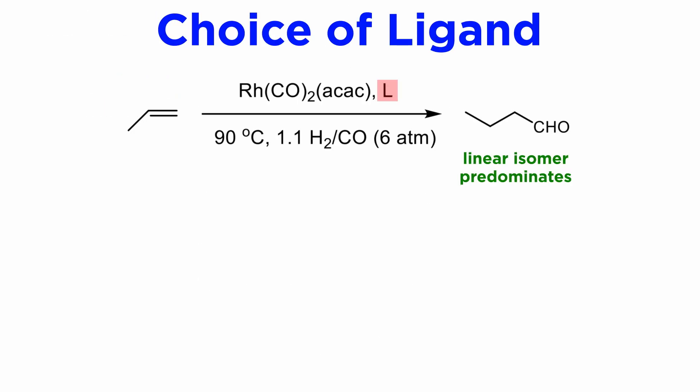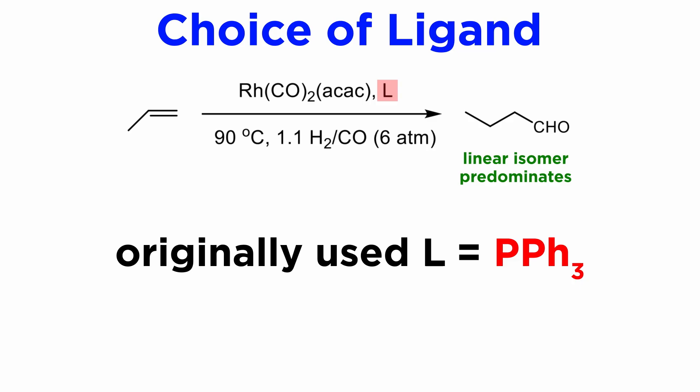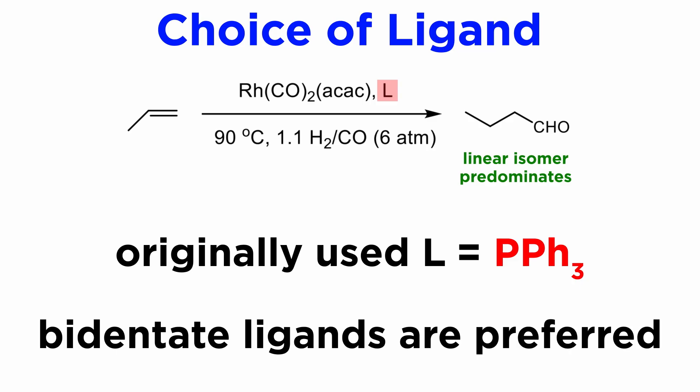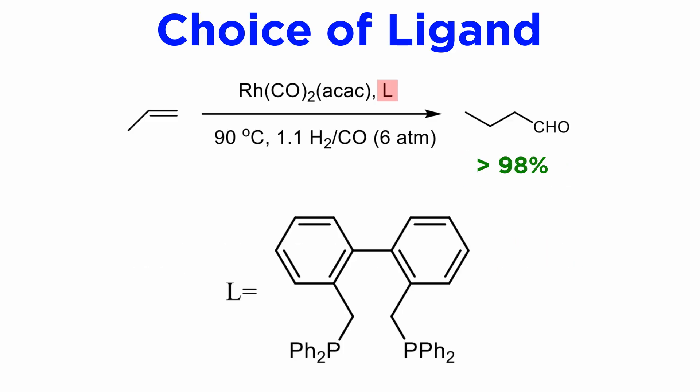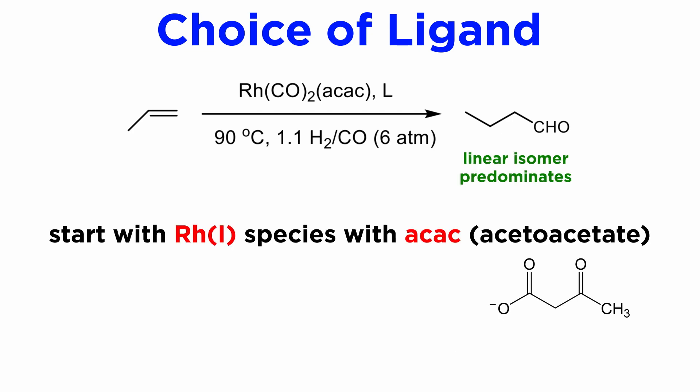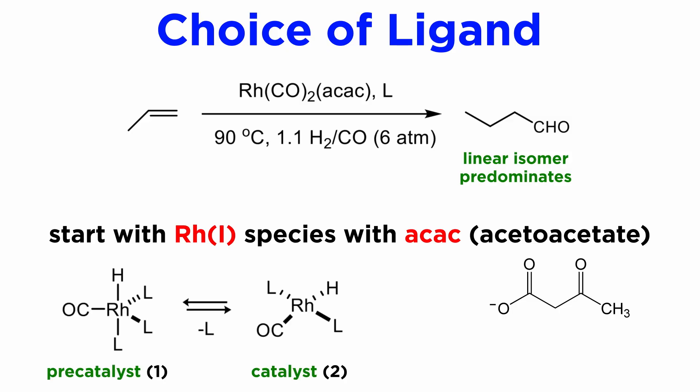The ligand has undergone major evolution over the years. Initially, triphenylphosphine ligands were used, but it was soon discovered that bidentate ligands yield better linear-to-branched ratios. For example, butanal can be obtained in greater than 98% regioselectivity using the bidentate ligand shown here. To screen ligands, it is advantageous to start with a rhodium(I) species containing a simple group, usually acetoacetate, abbreviated as ACAC. This is activated by hydrogen gas to release acetoacetic acid while forming, upon addition of a ligand, the RhH species depicted as 2 in the scheme from before. These precatalysts make the screening of complex ligands especially convenient.